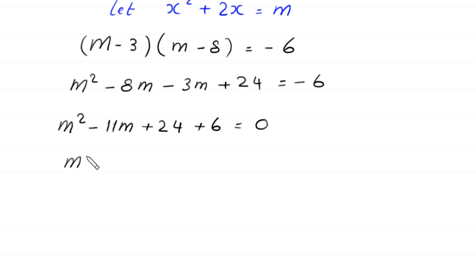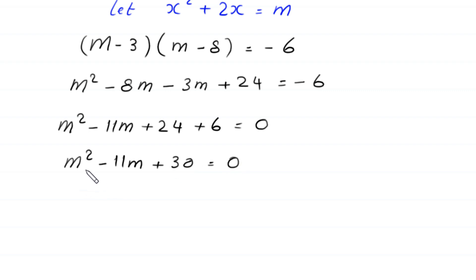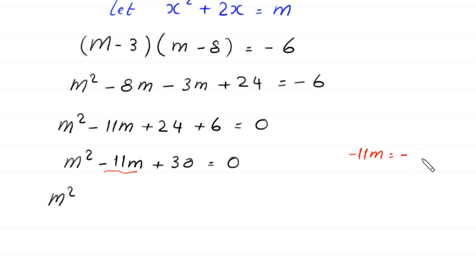Next, m squared minus 11m, and 24 plus 6 gives plus 30, is equal to 0. Now this is a quadratic equation and is factorable, so we solve it by factorization. We can split negative 11m as negative 6m minus 5m.